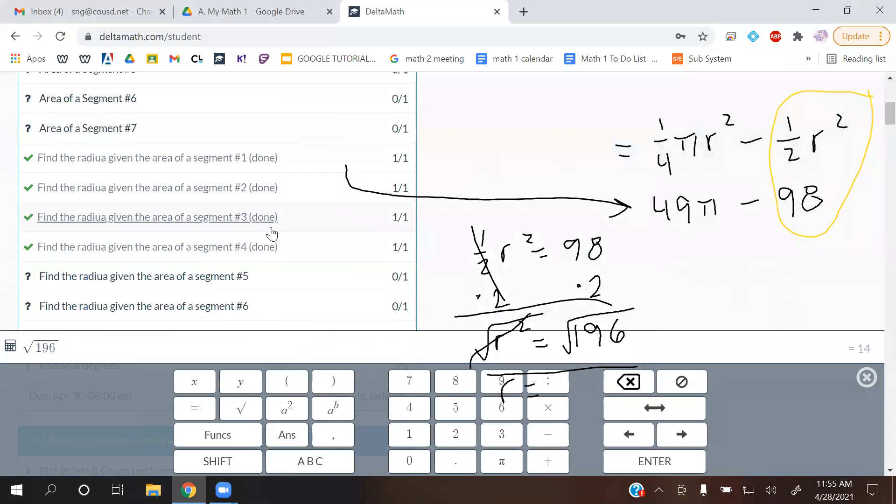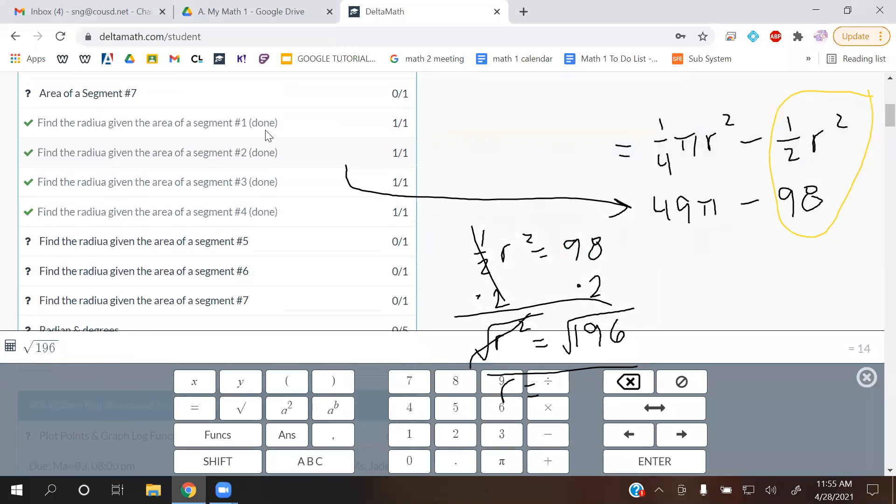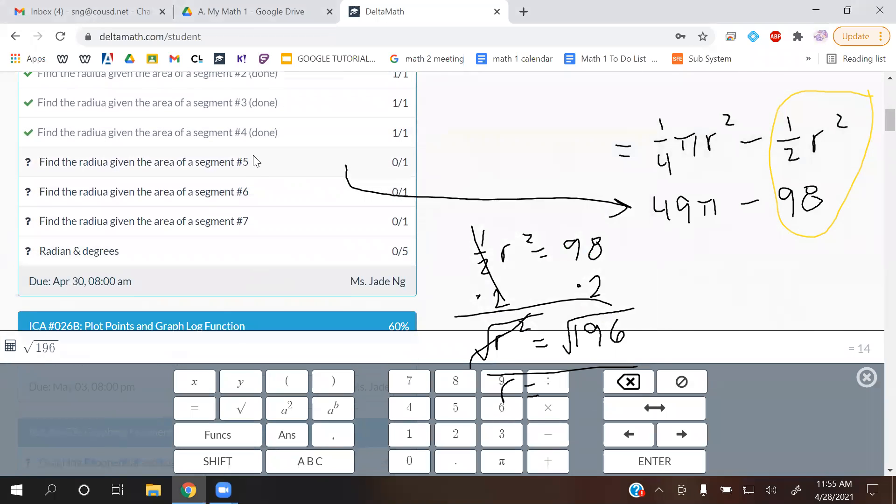Alright, hopefully that was enough examples for you guys. So there's no reason you could have gotten any of those wrong because we did it together. Now it's your task to do 567 on your own. I'll see you in the next video for radians and degrees.